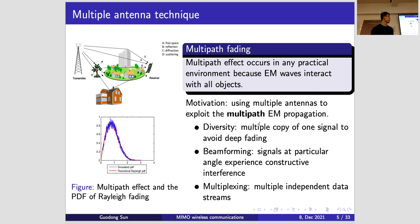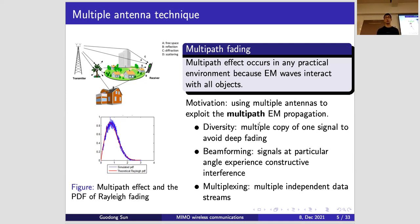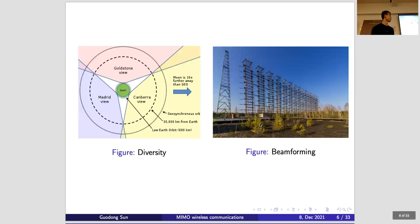Diversity is to receive multiple copies of the same signal to avoid deep fading. If we assume the probability of deep fading is 10%, and you have two antennas, the probability of deep fading is 10% times 10%, which increases reliability. Beamforming is to coordinate multiple transmitting antennas to adjust their phase and send signals in specific directions. Let's look at how these two directions are taken to extremes.